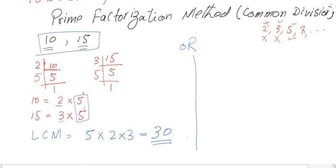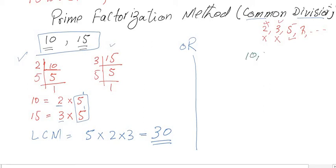Now I'll demonstrate the common divisor method. We place 10 and 15 together in a division form. We try to divide by the smallest prime number that divides at least one of them. Starting with 2: 10 divided by 2 gives 5, but 15 cannot be divided by 2, so we leave 15 as it is.